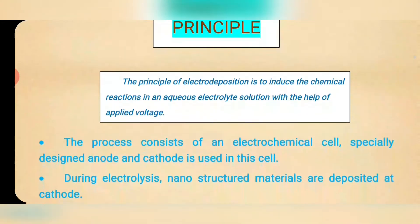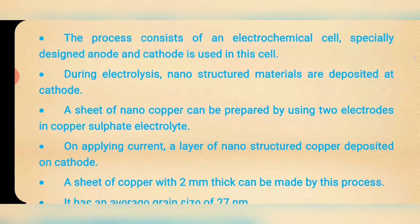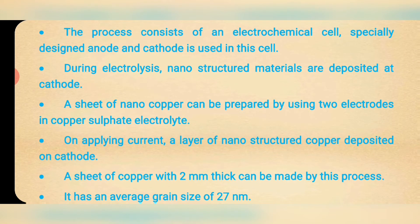By understanding this principle, we can easily follow the process. The process consists of an electrochemical cell. Specially designed anode and cathode is used in this cell. During electrolysis, nanostructured materials are deposited at cathode.